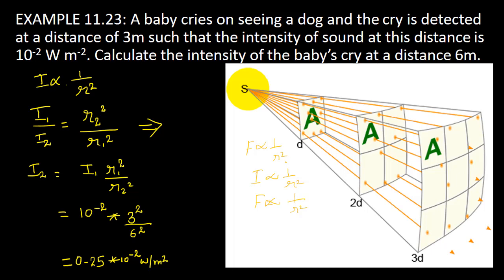The surface area is 4π r square, so intensity is proportional to 1 by r square — that is, inversely proportional to r square. Therefore, I₁ by I₂ is equal to r₂ by r₁ all squared, and so I₂ is equal to I₁ multiplied by r₁ square divided by r₂ square.